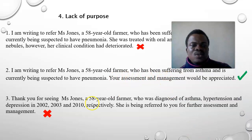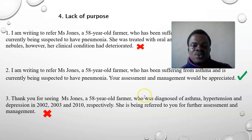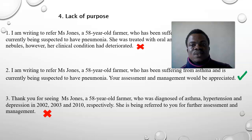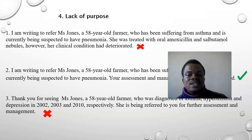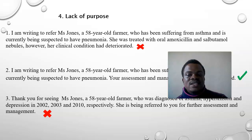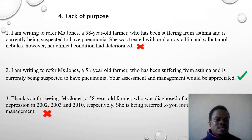Another introduction lacks clarity: 'the patient who was diagnosed with asthma, hypertension, and depression is being referred.' The GP has been managing the patient for those conditions for years — that's not the reason for referral. The reason is that the patient's condition has deteriorated and you are now suspecting pneumonia. The purpose here is vague.